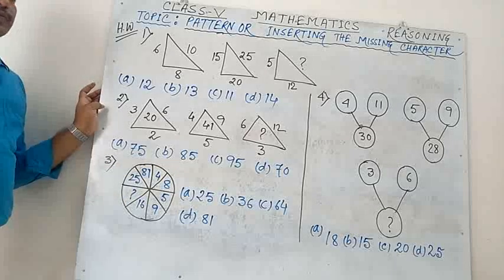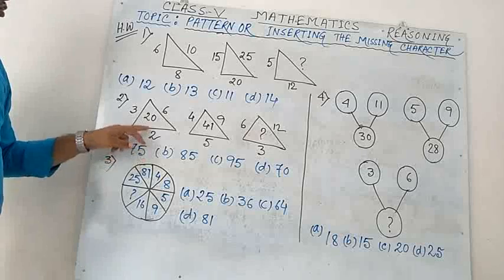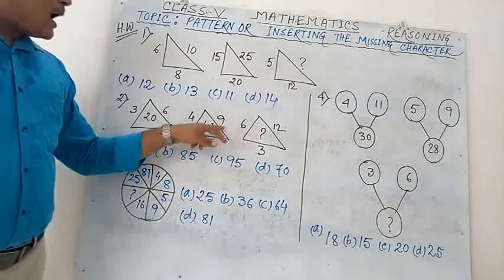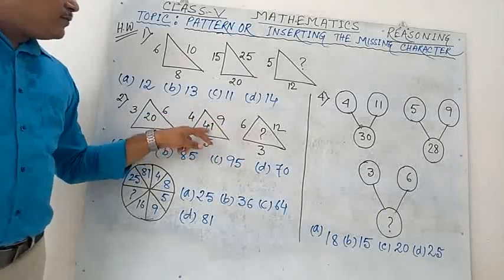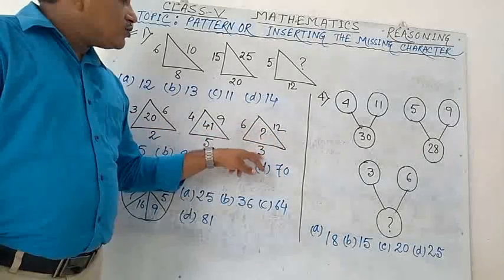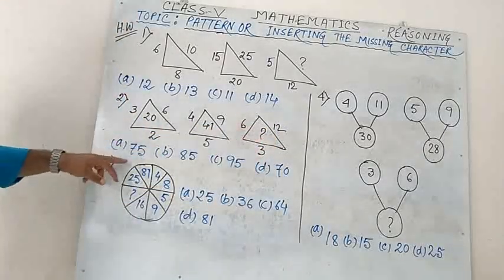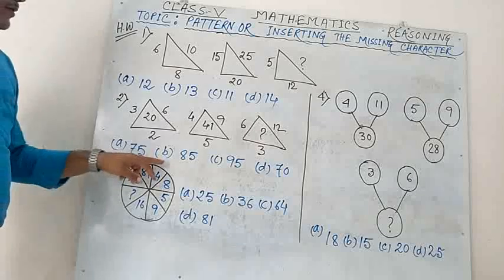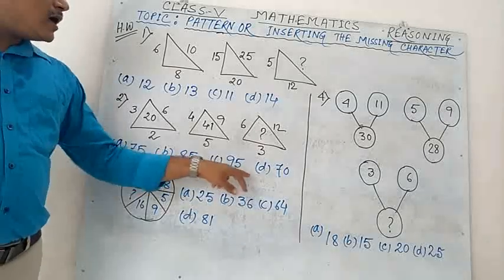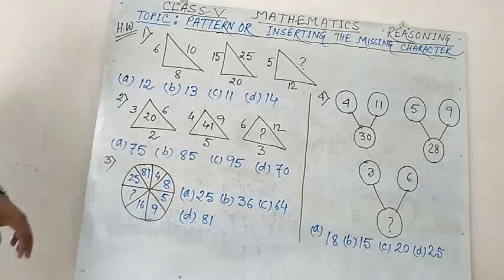Number 2: 3, 6, 2 → 20; 4, 9, 5 → 41; 6, 12, 3 → question mark. Options: A) 75, B) 85, C) 95, D) 70.